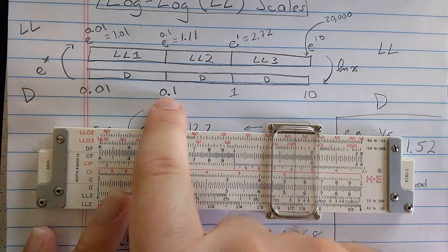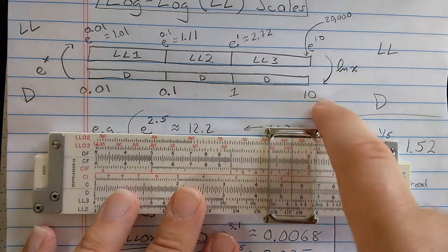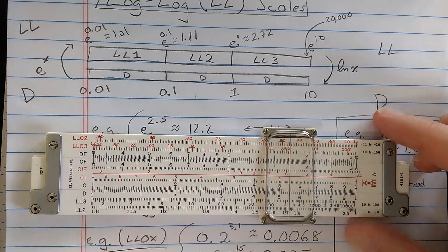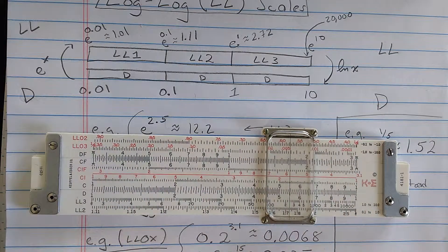0.01 to 0.1 is LL1, 0.1 to 1 is LL2, 1 to 10 is LL3. These are marked for you on this K and E rule.